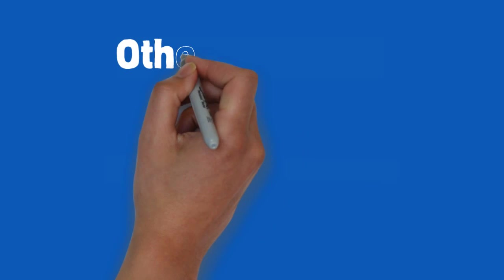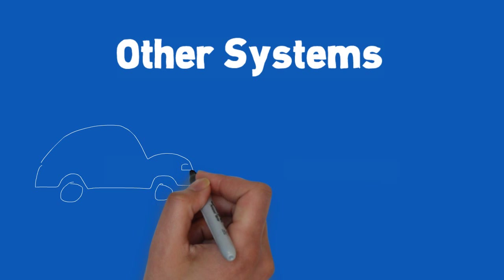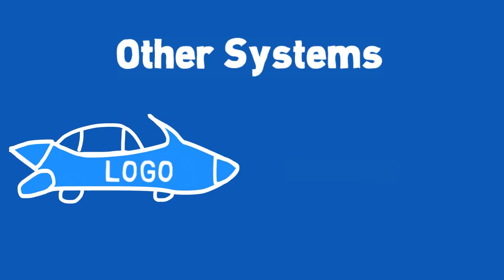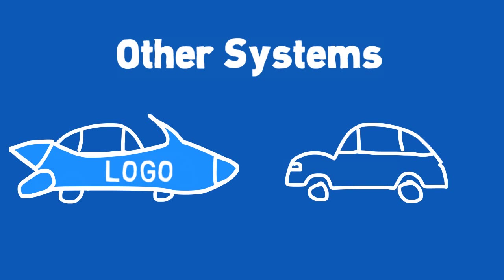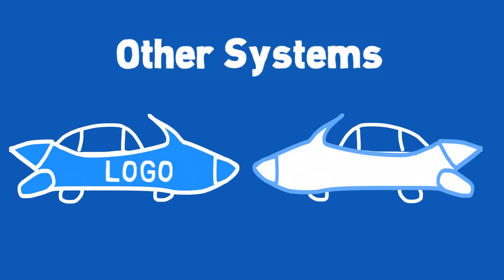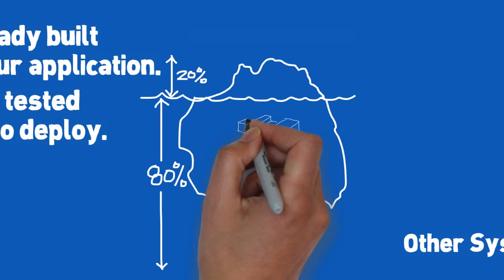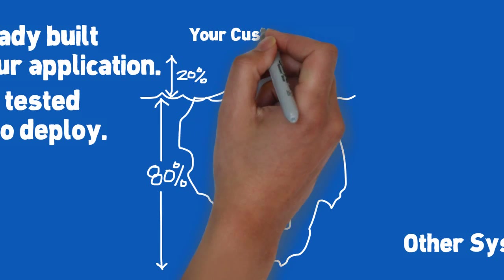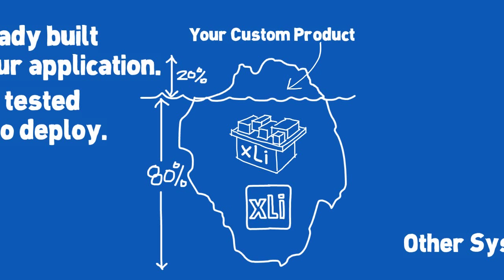You may be asking yourself, don't other systems allow you to customize them? Yes and no. Other systems use templates, skins, and different color schemes so you're able to brand their products with your logo. But is that what you really want? Their product still has the same features, same limitations, and you're guaranteed to see the same feature set in your competitors' offerings. Back to the iceberg — the XLI building blocks are underneath the water. They leave it up to you to define how they look and how they're used. This means you can create your product just as you would like it to be.